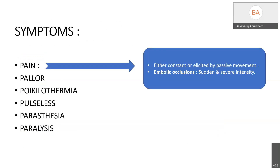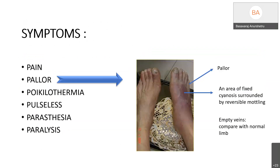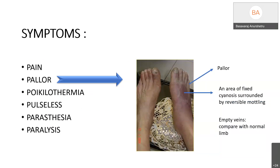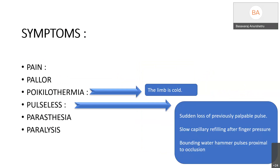The symptoms include pain, which is either constant or elicited by passive movement. In embolic occlusion, it is sudden and severe in intensity. The leg is usually pallid with an area of fixed staining surrounded by reversible or irreversible mottling, as seen in the picture, and there are empty veins compared with the normal limb. The limb is cold, there is sudden loss of previously palpable pulse, slow capillary filling, and water hammer pulse proximal to the site of occlusion.